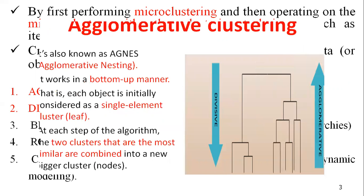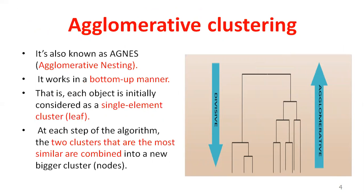Coming to the first one: agglomerative nesting, or agglomerative clustering method. What is the agglomerative clustering method? The agglomerative clustering method is a bottom-up strategy. It typically starts with each leaf node, which means it allows each object to form its own cluster, and then iteratively merges the clusters into larger and larger clusters until all objects are in a single cluster or certain termination conditions are satisfied.